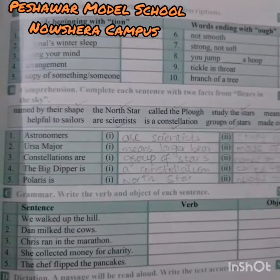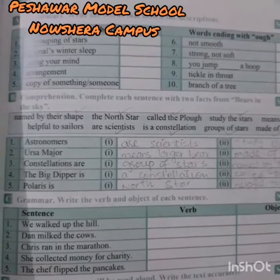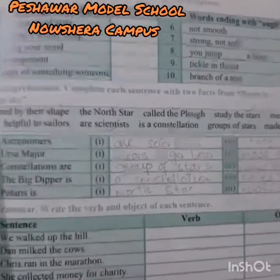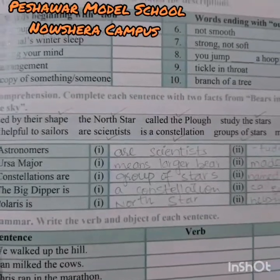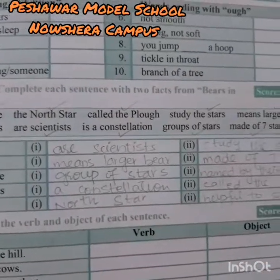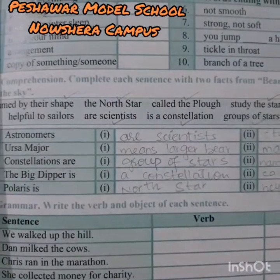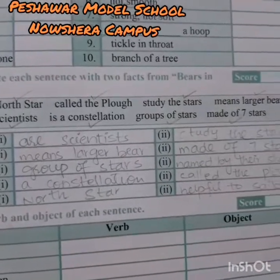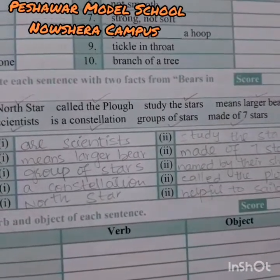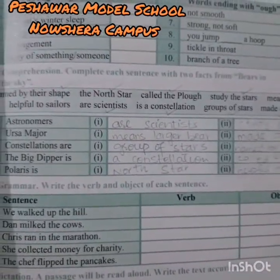There are 10 phrases given here. I will read them: named by the shape, the north star, called the plow, study the stars, means larger bear, helpful to sailors, are scientists, is a constellation, groups of stars, made of seven stars. These are the words you are going to use in these answers.